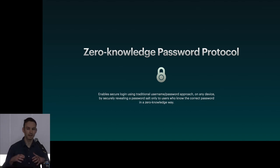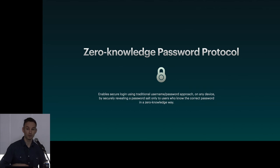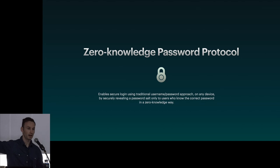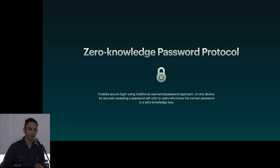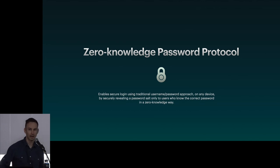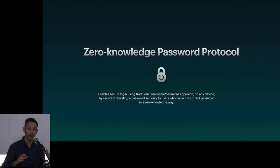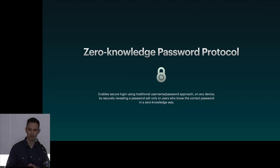This allows you to create that username-password experience on any device. If a user loses their device but remembers their username and password, they can log in on any other device. A lot of end-to-end encryption protocols use QR codes and key signing for adding another device to an account. You can actually do that with Shelter Protocol too, but Shelter Protocol also allows you to reproduce the standard username and password experience.